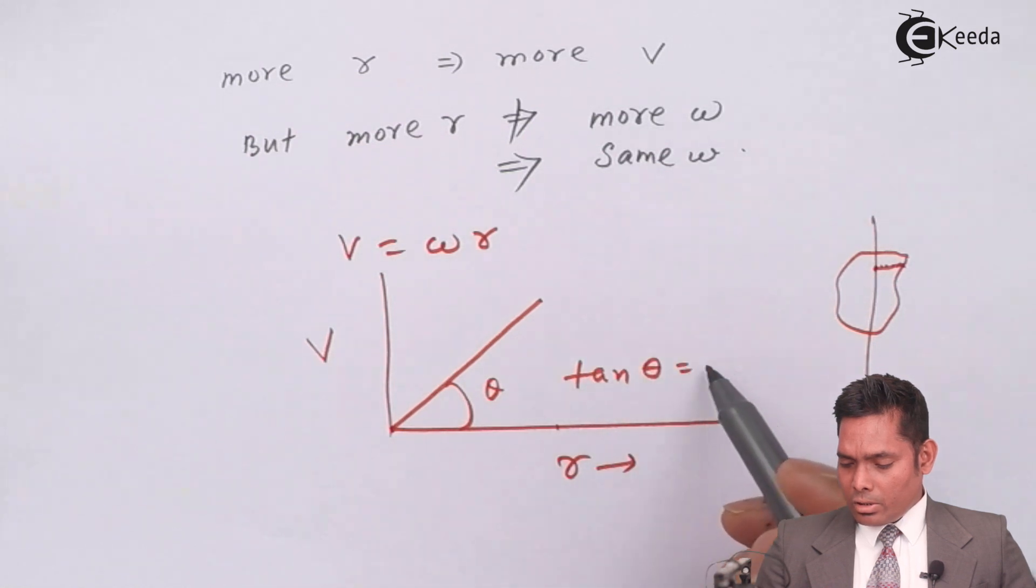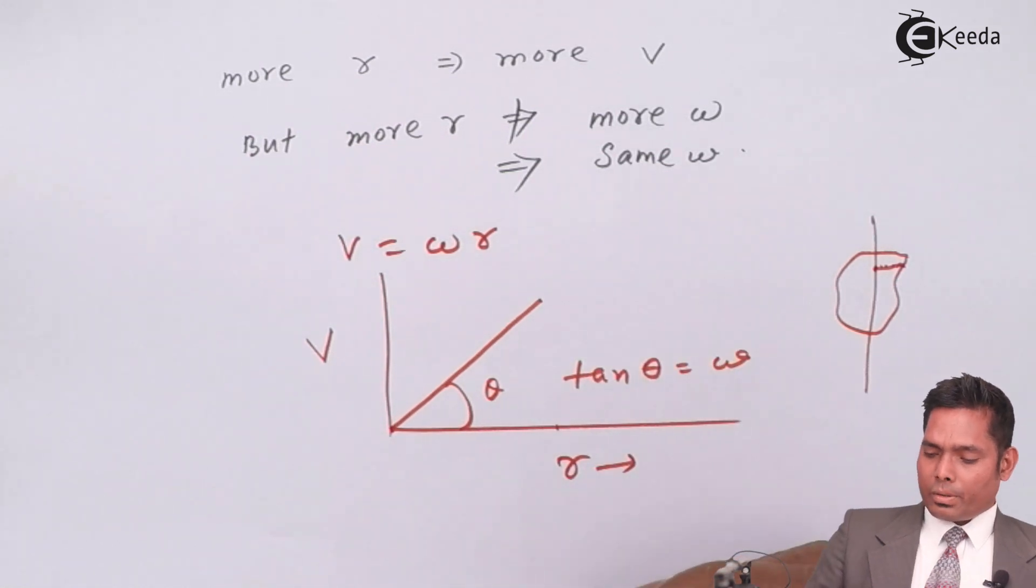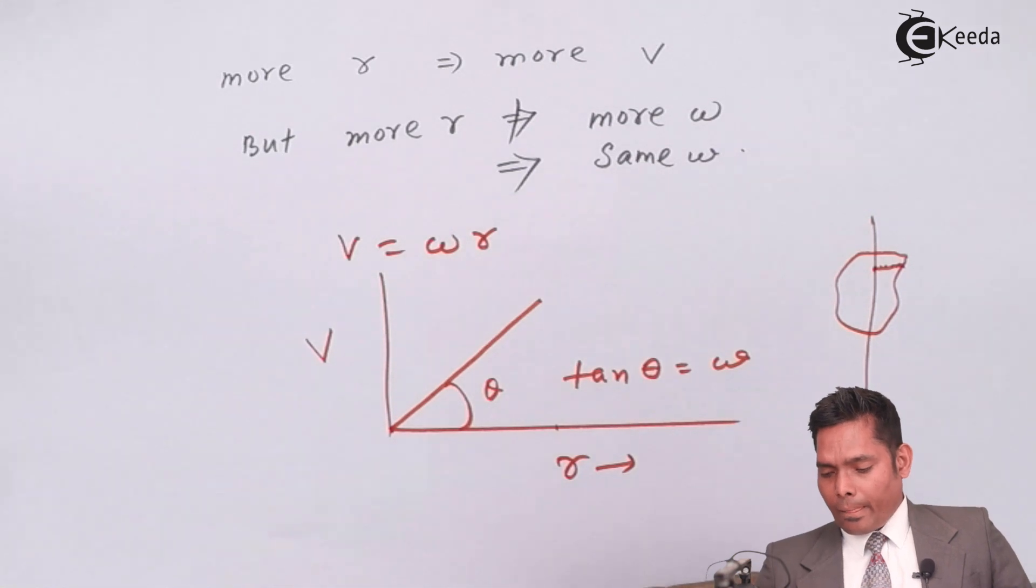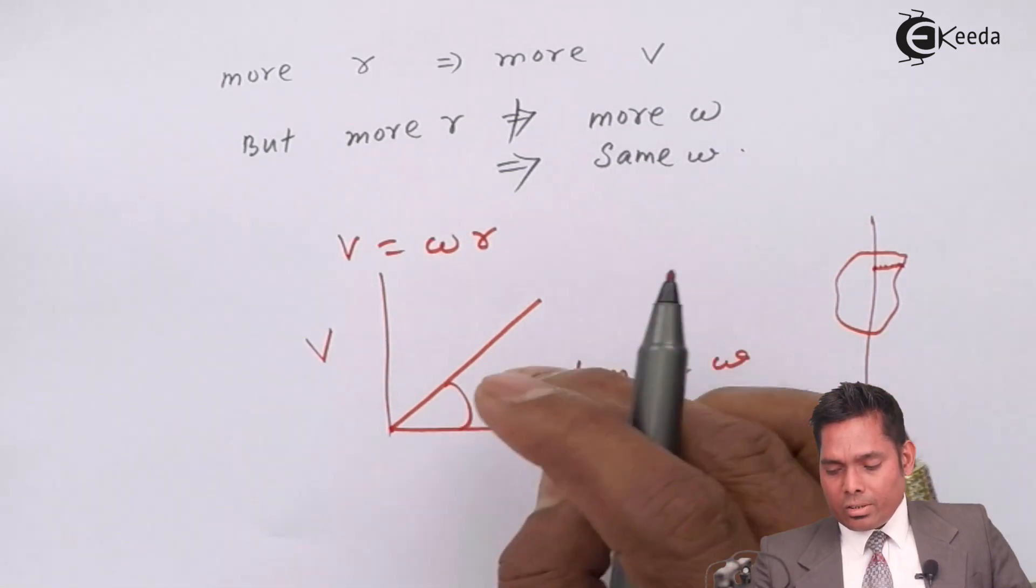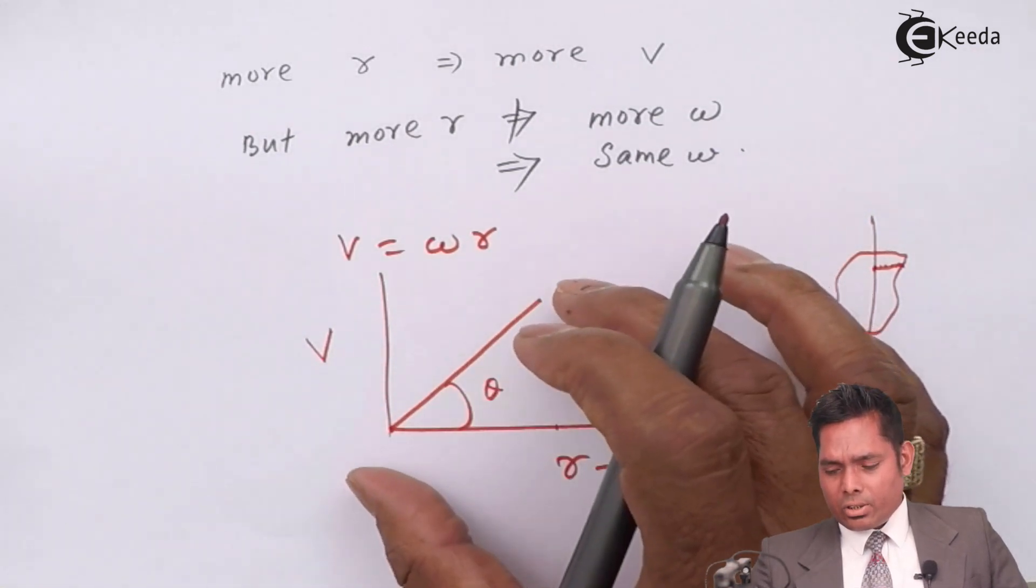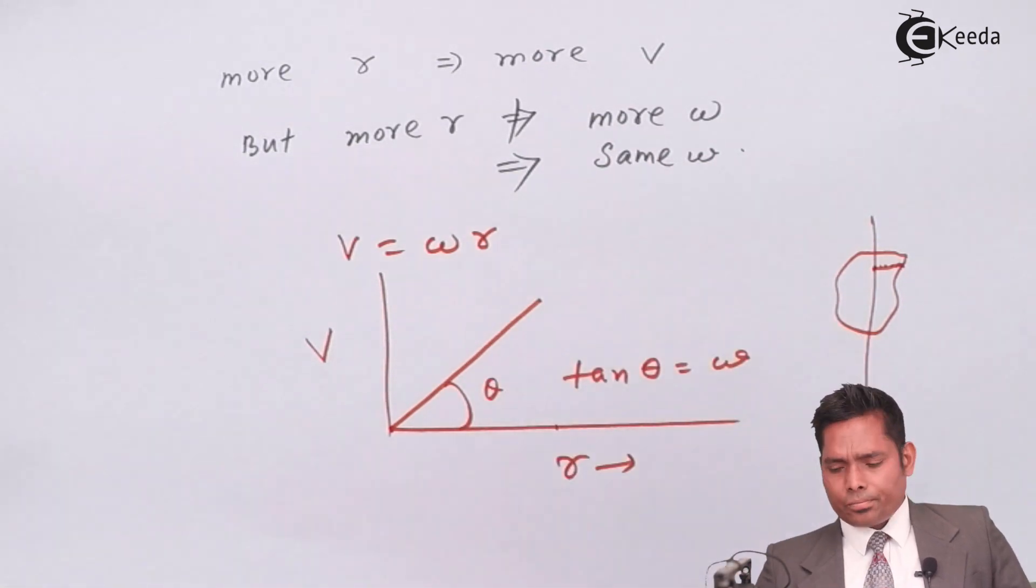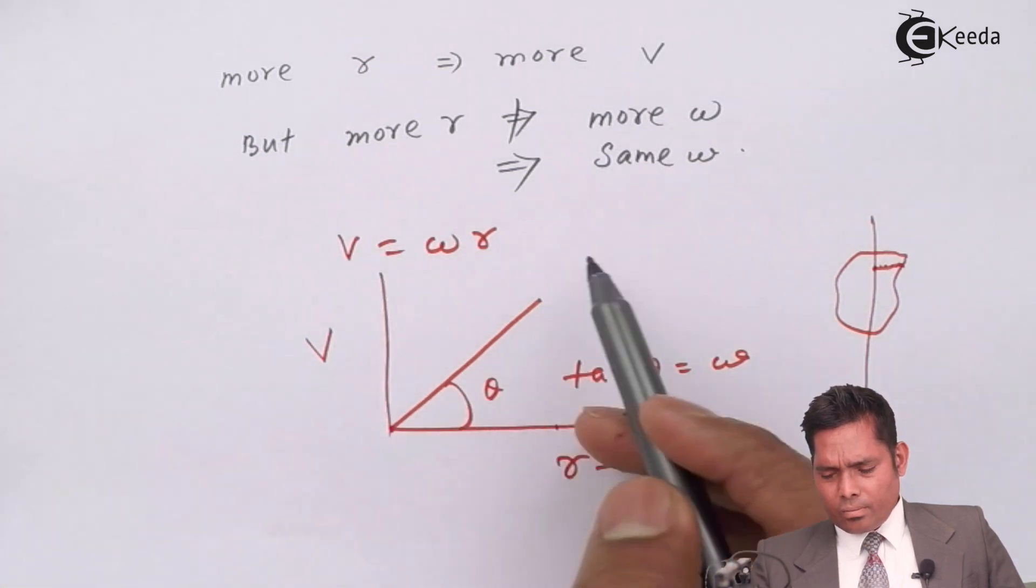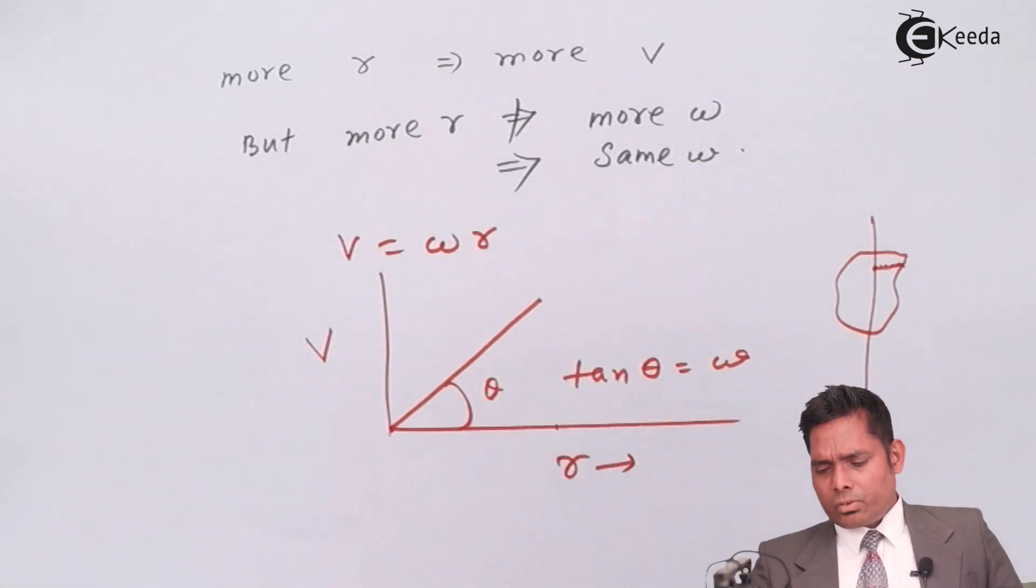Because this is theta, and tan theta is omega now, slope of this curve. So it is a linear relationship. If r increases at a steady rate, it is a constant rate, the slope is constant, v is increasing. It is an equation of a straight line.